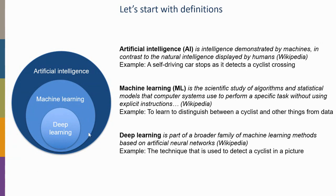Deep learning is a subclass within machine learning. It's part of a broad family of methods based on artificial neural networks — a specific technique used, for example, to detect a cyclist in a picture.